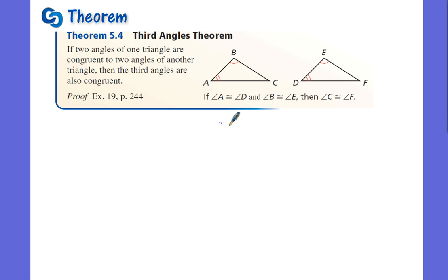Well, it says, hey, if we've got two triangles and one pair of angles in two triangles are congruent and a second pair of angles are congruent, the only way this works is if the third angle is also congruent, right? It only makes sense.